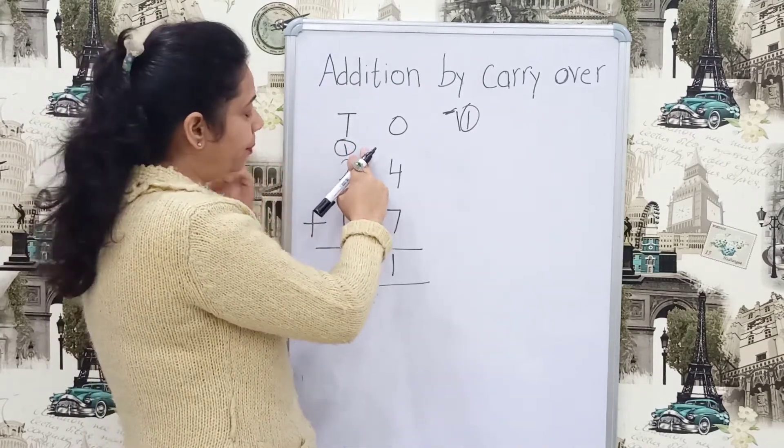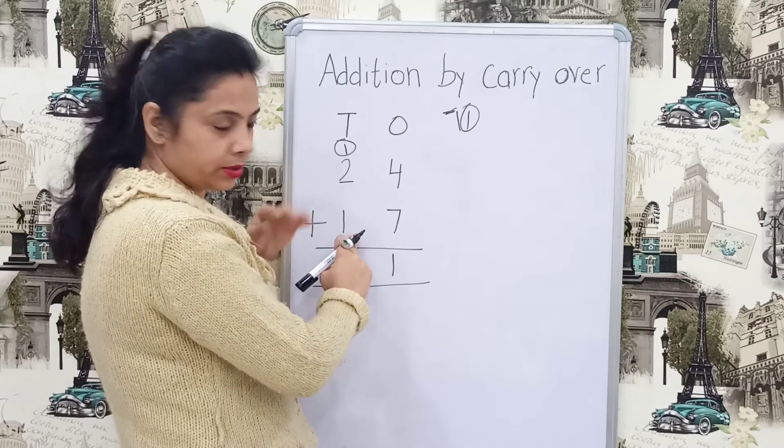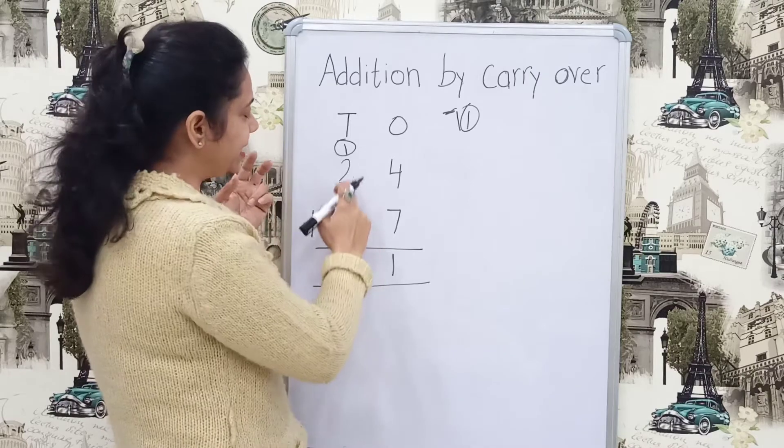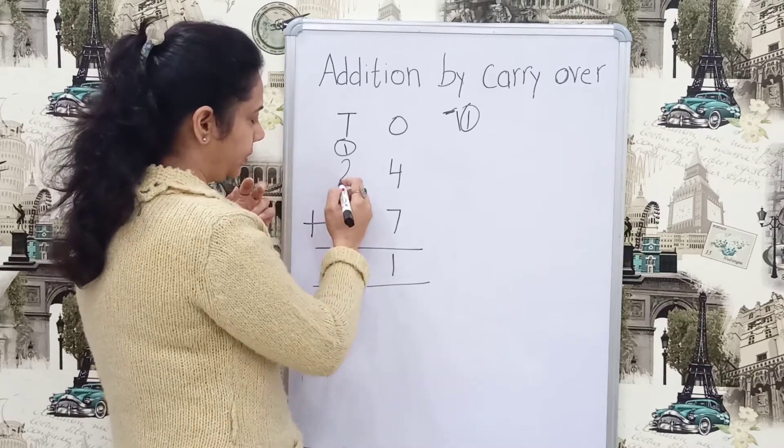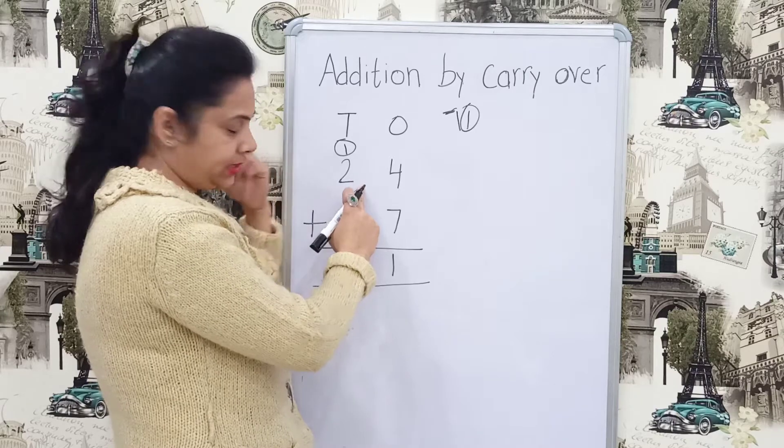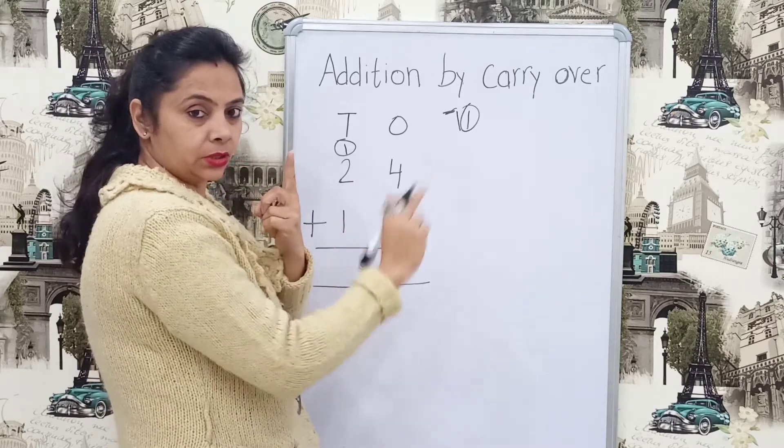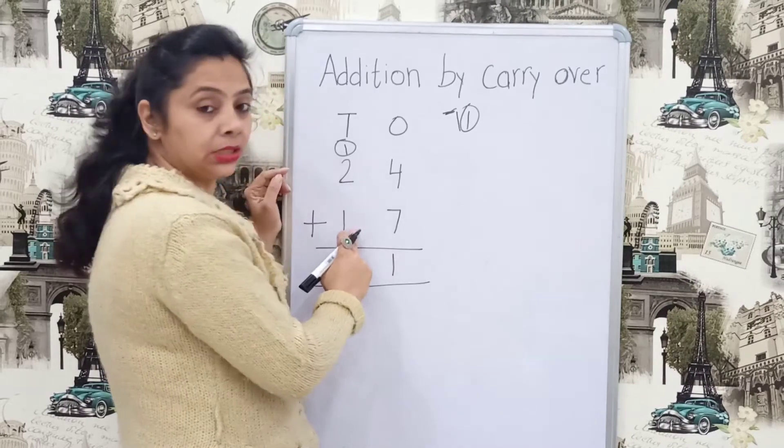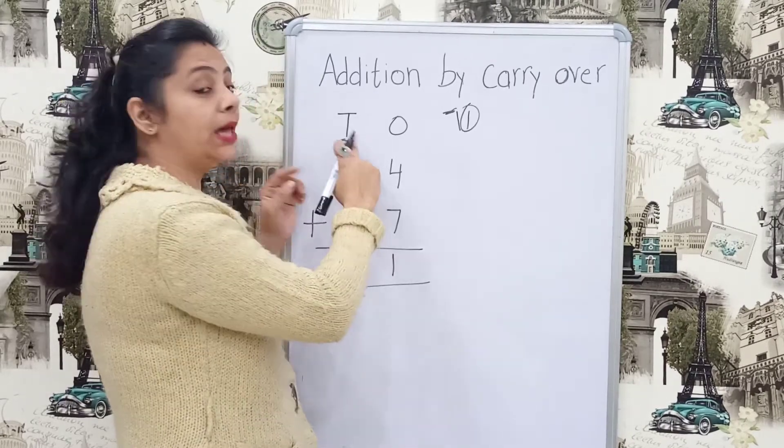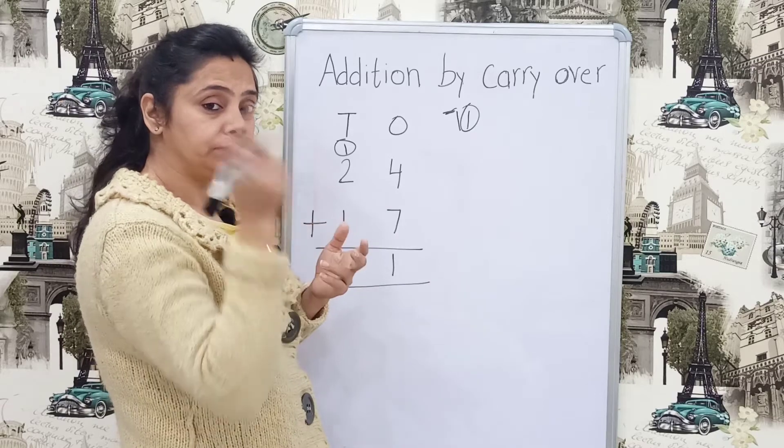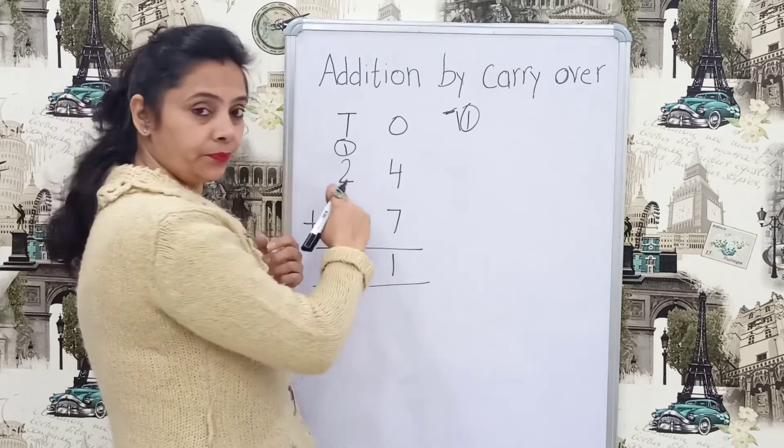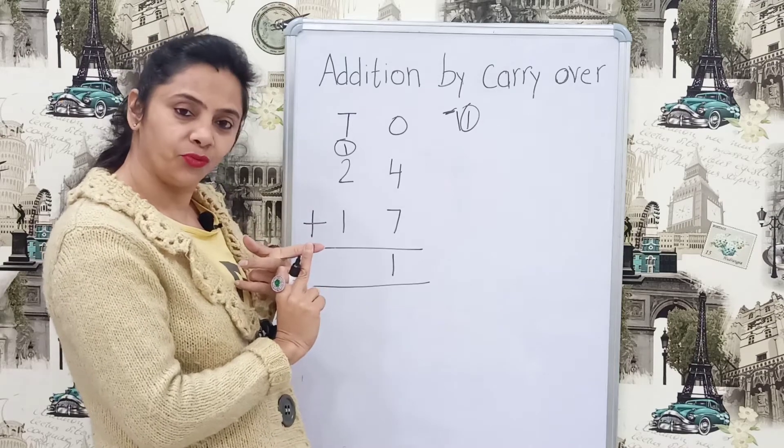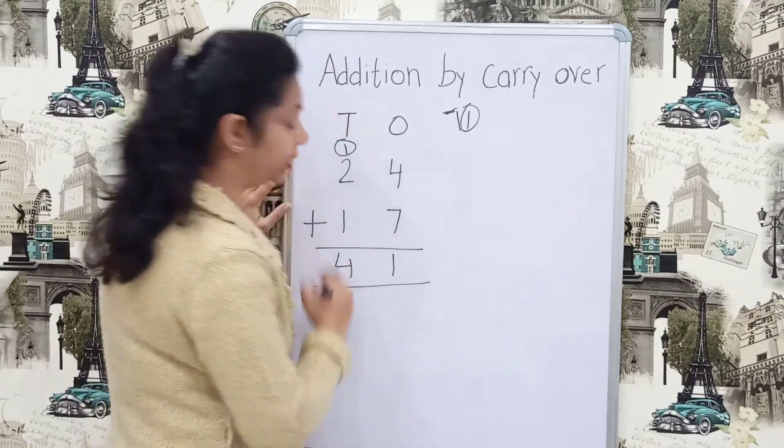So in this case also we have to add 1's place first. 7 plus 4. What is the sum of 7 plus 4? Keep 7 in your mind and 4 fingers. What comes after 7? 8, 9, 10 and 11. 1 carried over. 11 will write like this. This is 1's place, this is 10's place. 1 here and 1 will be carryovered. Now in that 10's place we have to add these 2 numbers of 10's place plus 1 carried over. 2 plus 1, 3 plus 1, 4.